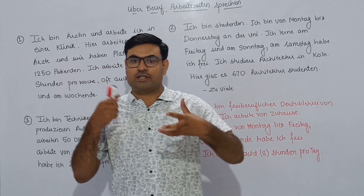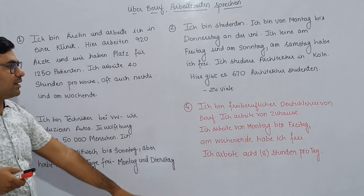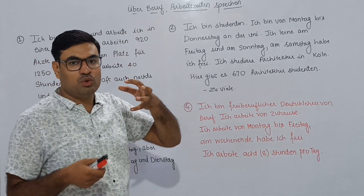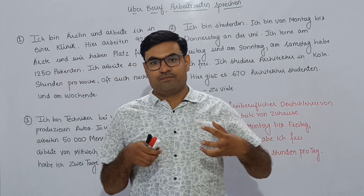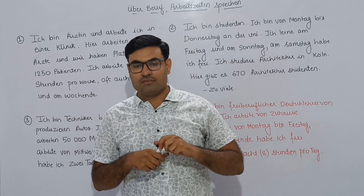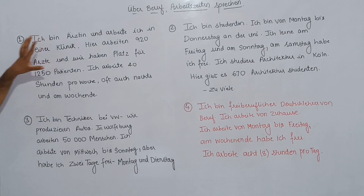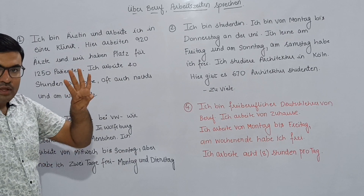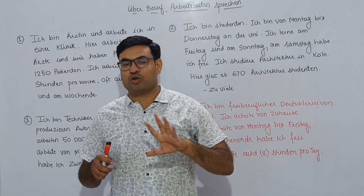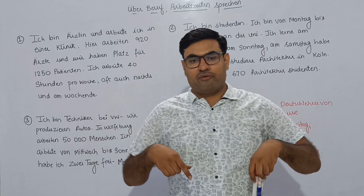I have written some text over here. These are some German texts about Überberuf and Arbeitszeit expression — we discuss about profession and work time. We will be trying to understand how to read a German text. These are four paragraphs — how to read and how to understand the vocabulary, how the sentences are framed. All of this we will be learning today.